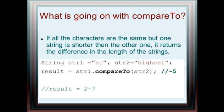If all the characters are the same, but one string is shorter than the other, it returns the difference in the length of the strings. So string1 is high and string2 is highest. String1.compareTo(string2) gives us negative 5. 2 minus 7, 7 characters in highest, gives us negative 5.